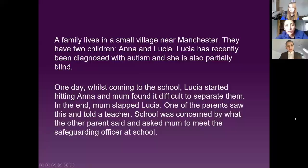Here is one short scenario. We've got a family who lives in a small village near Manchester. They have two children, Anna and Lucia. Lucia has recently been diagnosed with autism and she is also partially blind. One day, whilst coming to school, Lucia started hitting Anna and mum found it difficult to separate them. In the end, mum slapped Lucia. One of the parents saw this and told the teacher. School was concerned by what the other parent said and asked mum to meet the safeguarding officer at school.